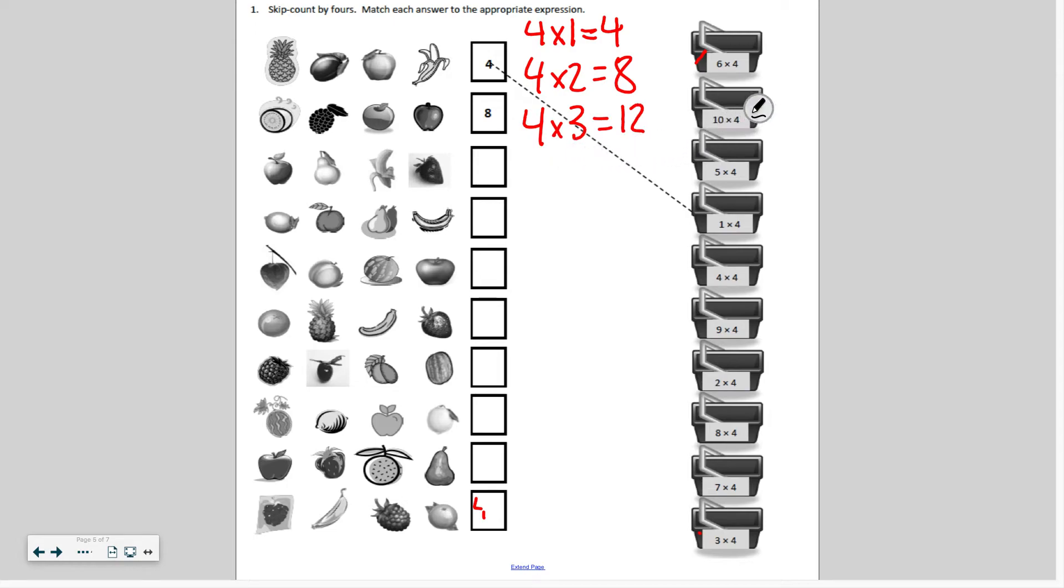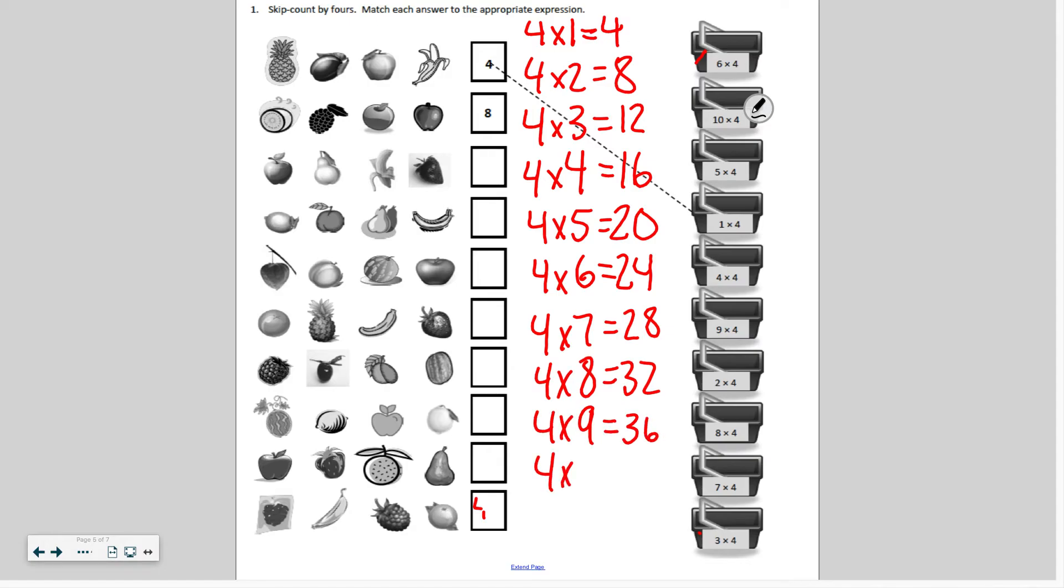If you need to, you can pause the video so that way you can go grab the materials you need. But I'm going to write down all the facts of four so that way you can use them to solve today's problems. Four times seven is twenty-eight. Four times eight is thirty-two. Four times nine equals thirty-six. And four times ten equals forty.